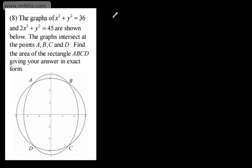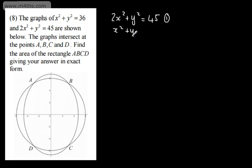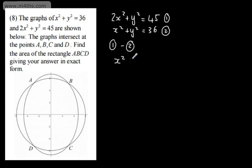We can find the coordinates of these points of intersection by setting up and solving simultaneous equations. So equation 1 is 2x squared plus y squared equals 45, and equation 2 is x squared plus y squared equals 36. These work nicely because we can eliminate the y squared term — doing equation 1 minus equation 2: 2x squared minus x squared is x squared, y squared minus y squared is 0, and 45 minus 36 is 9.